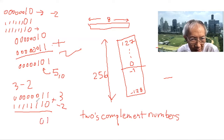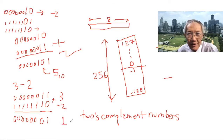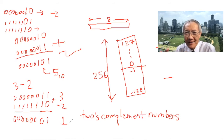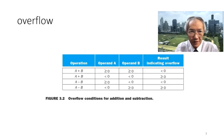Adding them together we get one, and then carry propagates through — because it's all ones, it carries all the way through: one zero zero zero zero zero zero. So we get the correct result. This is how two's complement addition and subtraction works.